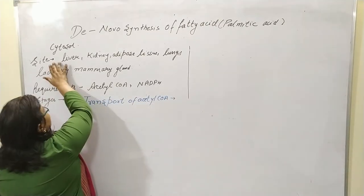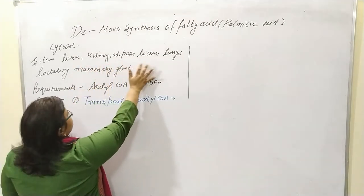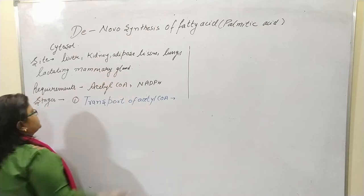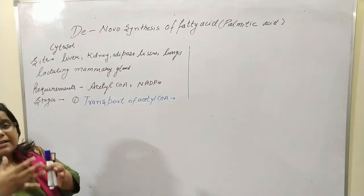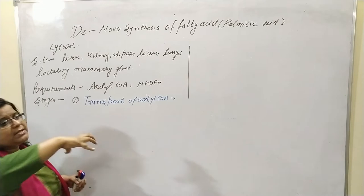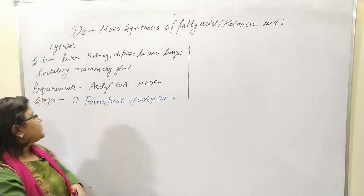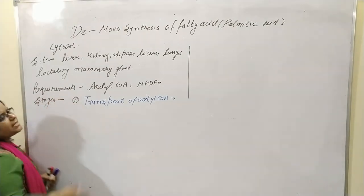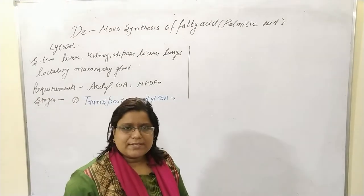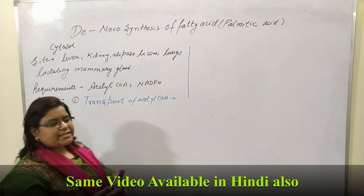The sites where fatty acid synthesis takes place include the liver, kidney, adipose tissue, lungs, and lactating mammary glands. Within the cell, the cytosol is the main place where this synthesis takes place. The basic requirements are NADPH and acetyl coenzyme A.